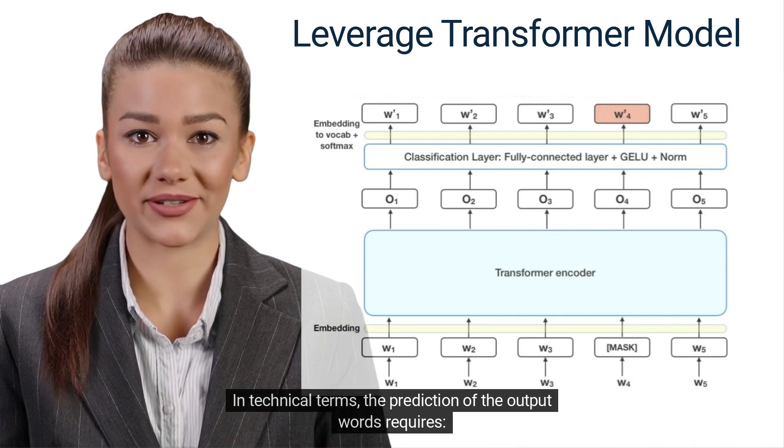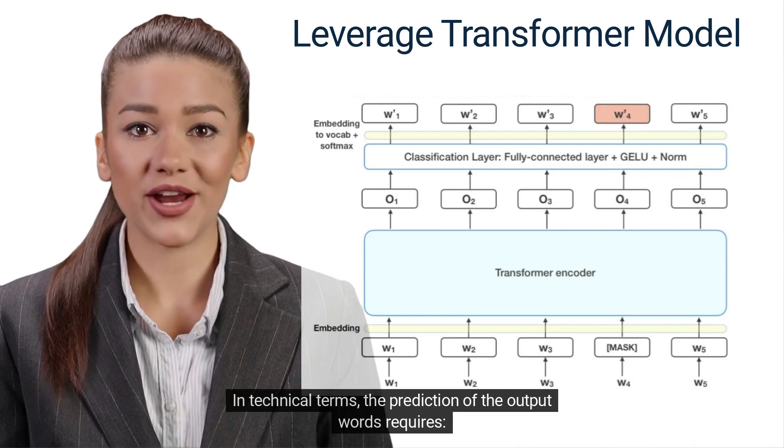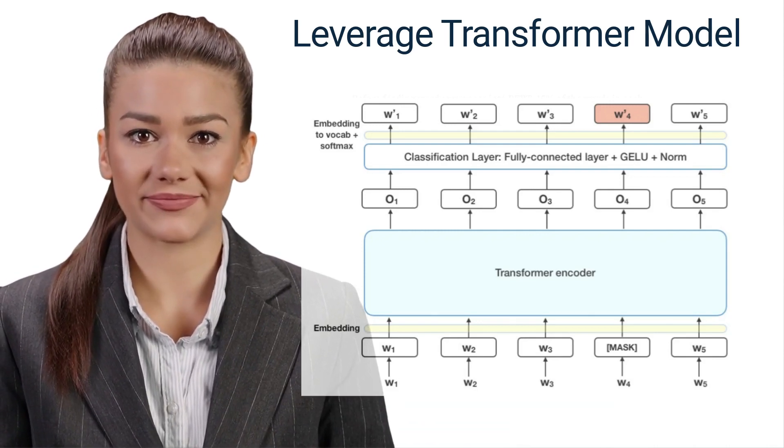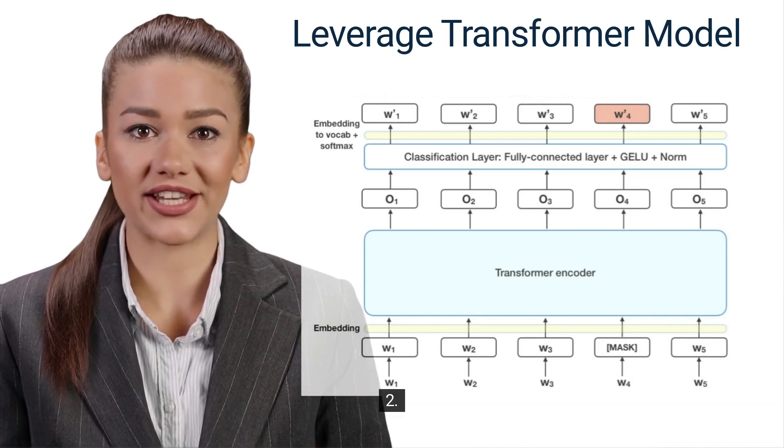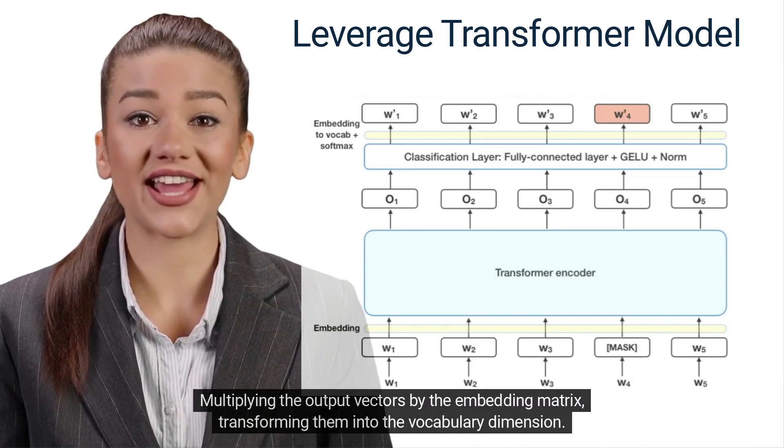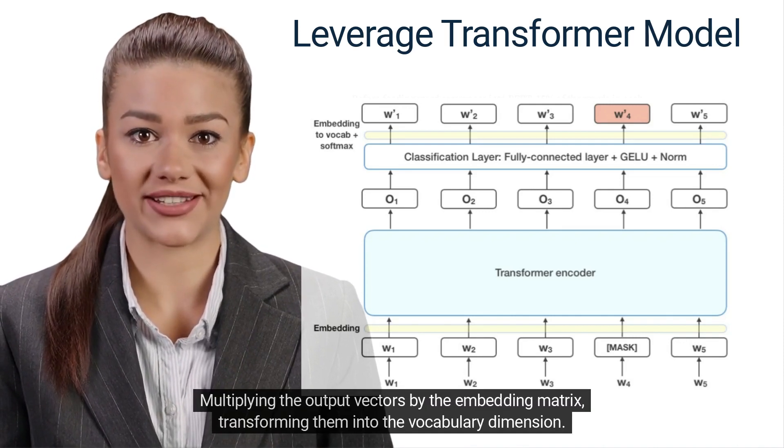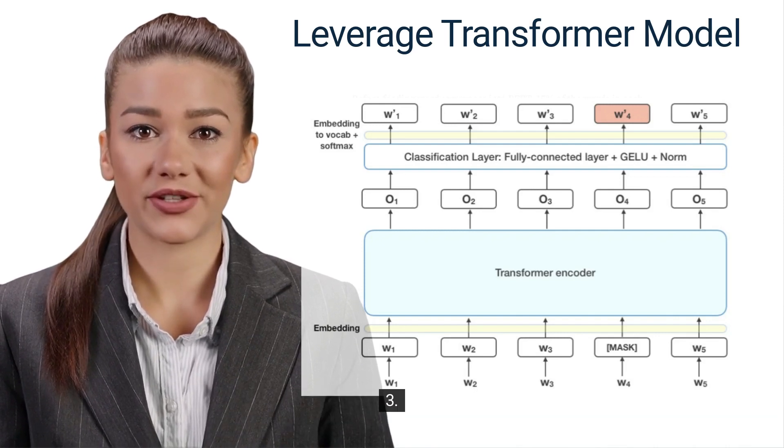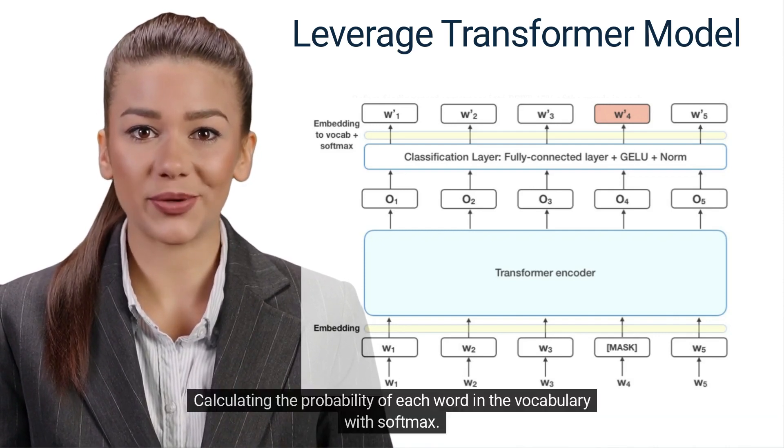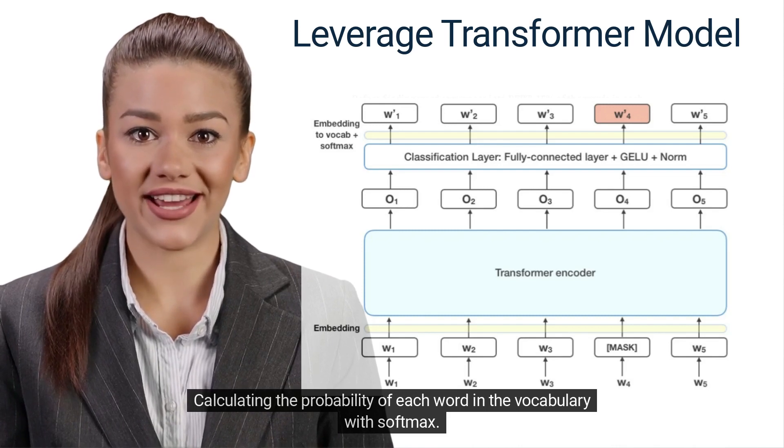In technical terms, the prediction of the output words requires: 1. Adding a classification layer on top of the encoder output. 2. Multiplying the output vectors by the embedding matrix, transforming them into the vocabulary dimension. 3. Calculating the probability of each word in the vocabulary with softmax.